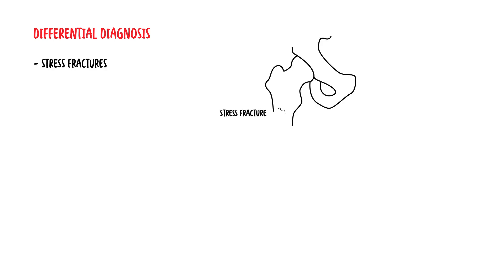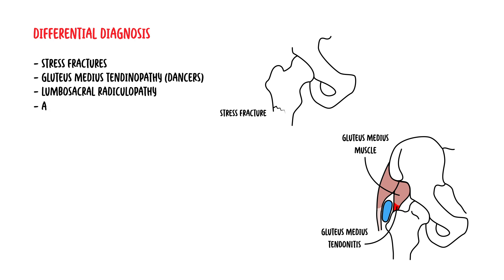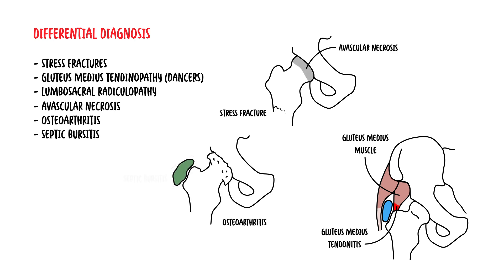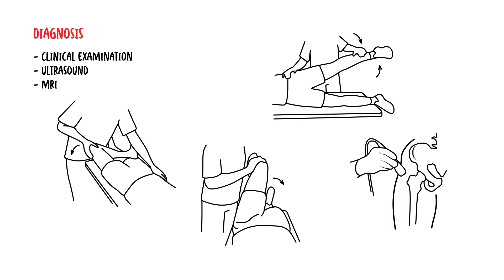Differential diagnoses to consider include stress fracture within the area, gluteus medius tendinopathy which is usually seen in dancers, lumbosacral radiculopathy, avascular necrosis, osteoarthritis, and septic bursitis. The diagnosis of trochanteric bursitis is made on clinical examination; however, an ultrasound and an MRI may help to rule out other differential diagnoses.